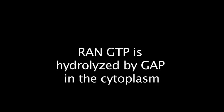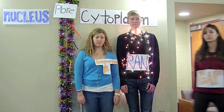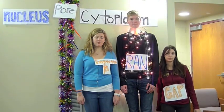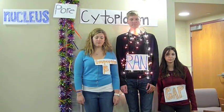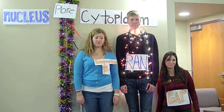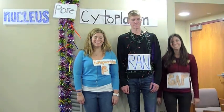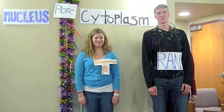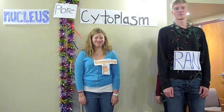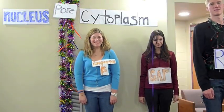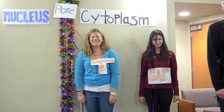RAN-GTP is now hydrolyzed by GAP in the cytoplasm, which is GTPase activating protein. This results in the conversion of RAN-GTP to RAN-GDP. RAN-GDP then dissociates from the receptor and the process starts again.